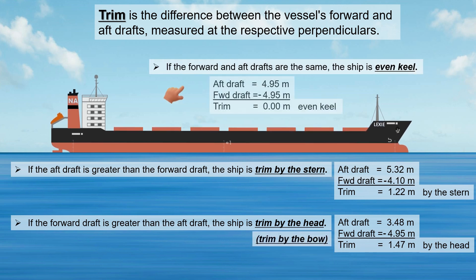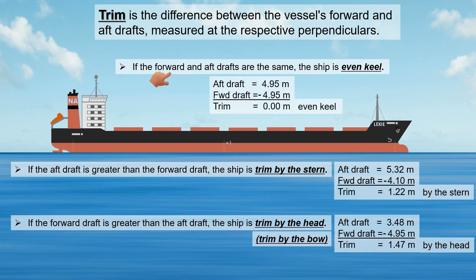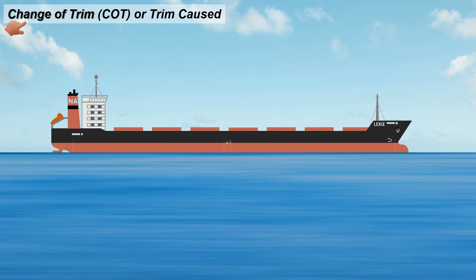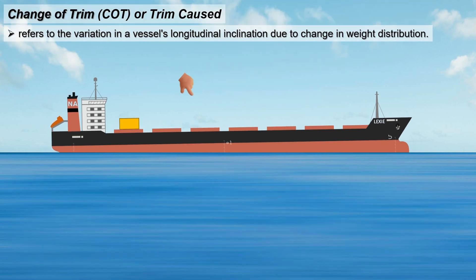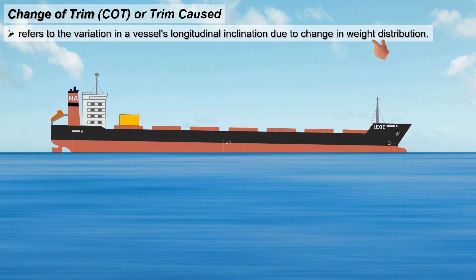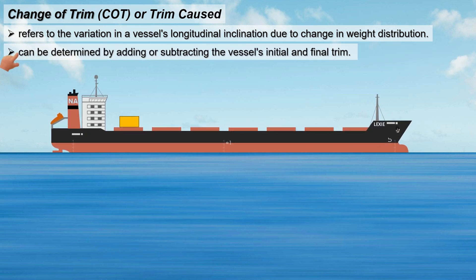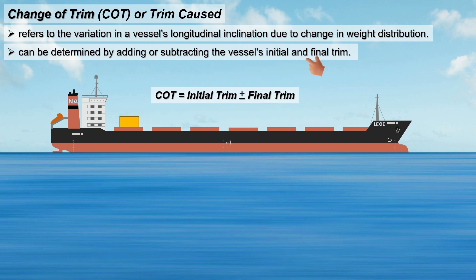If the forward and aft drafts are the same, it means zero trim — the vessel is said to be on even keel. The term 'change of trim' refers to the variation in a vessel's longitudinal inclination due to a change in weight distribution, and can be determined by adding or subtracting the vessel's initial and final trim.